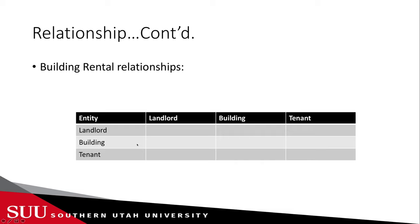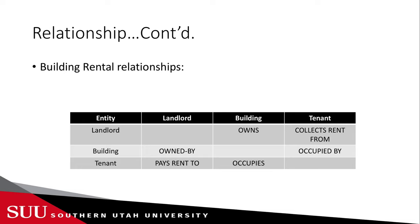From building to landlord — the building is owned by the landlord. From building to building — nothing. From building to tenant — the tenant occupies the building, and the tenant pays rent to the landlord. From tenant to building — the tenant occupies the building. From tenant to tenant — no relationship. We can fill the table this way, showing all the relationships between these entity types.